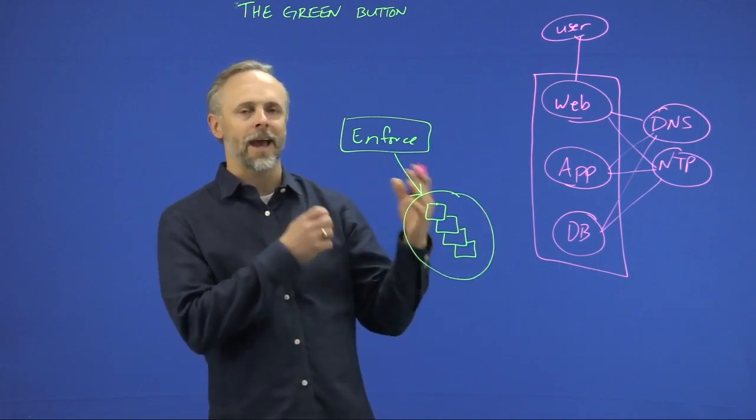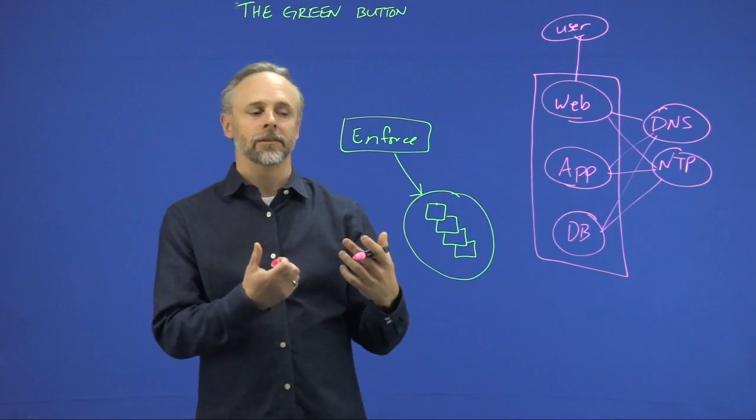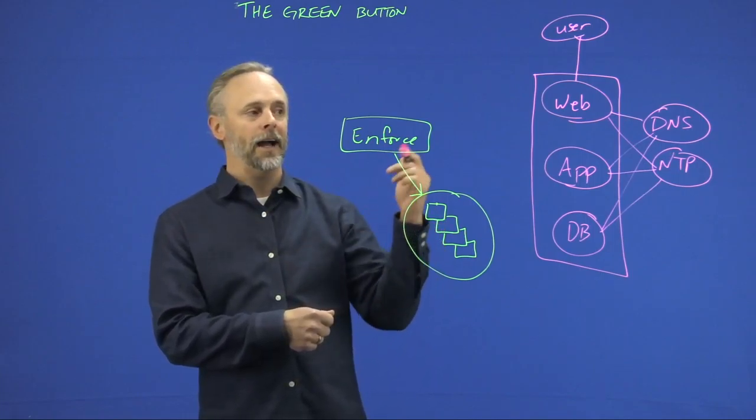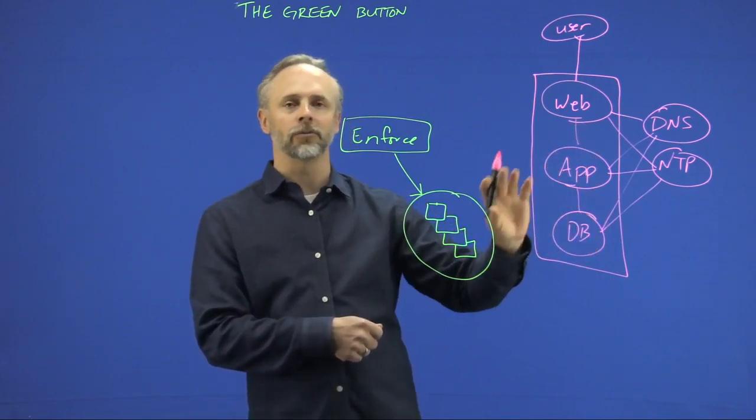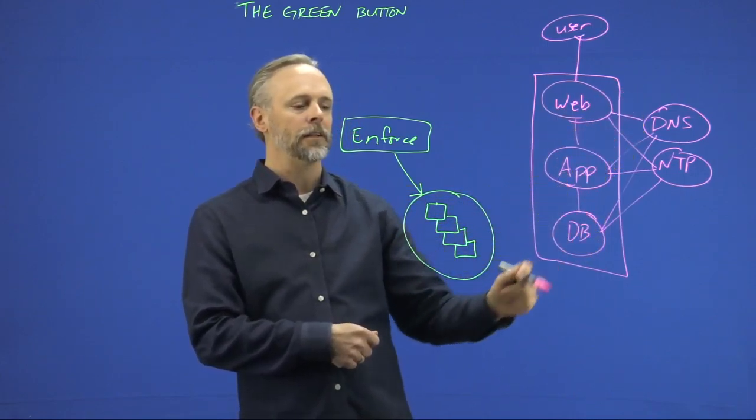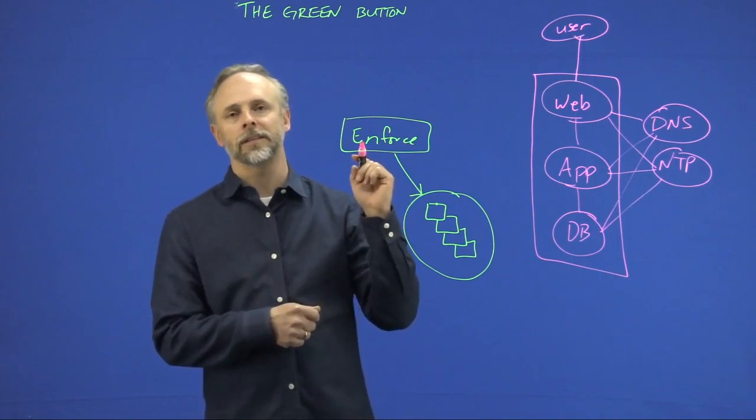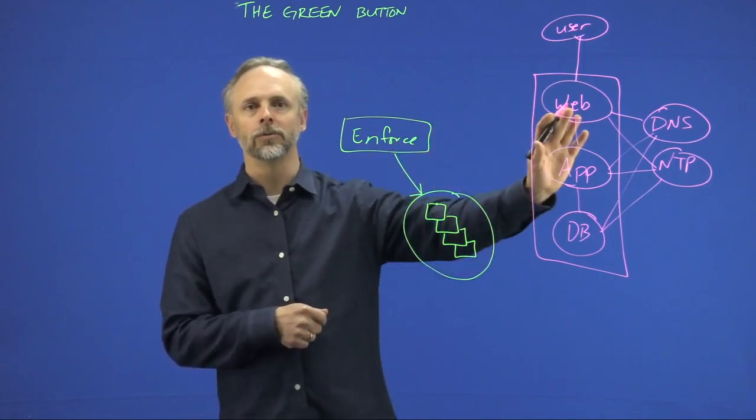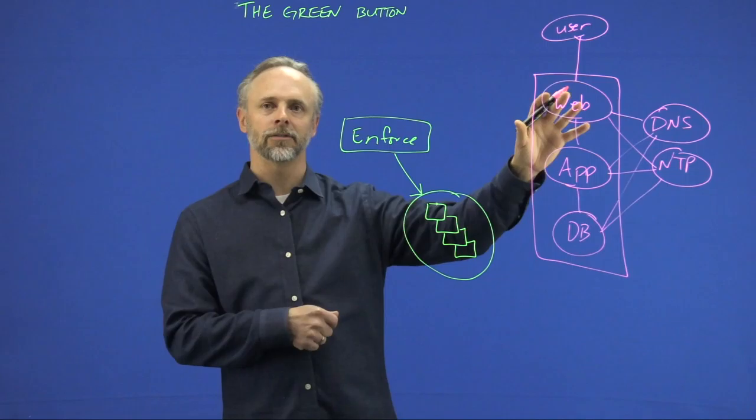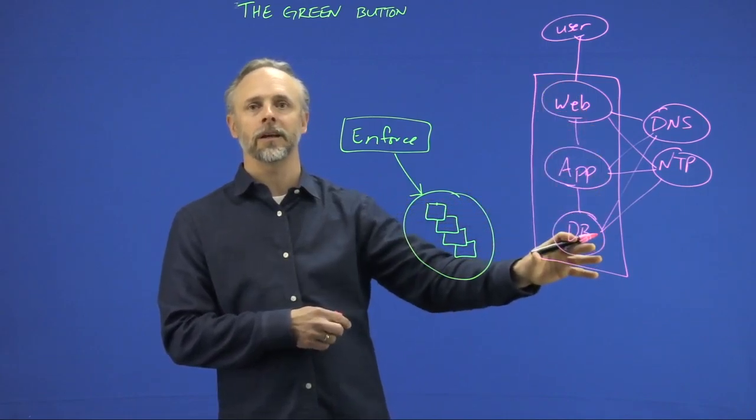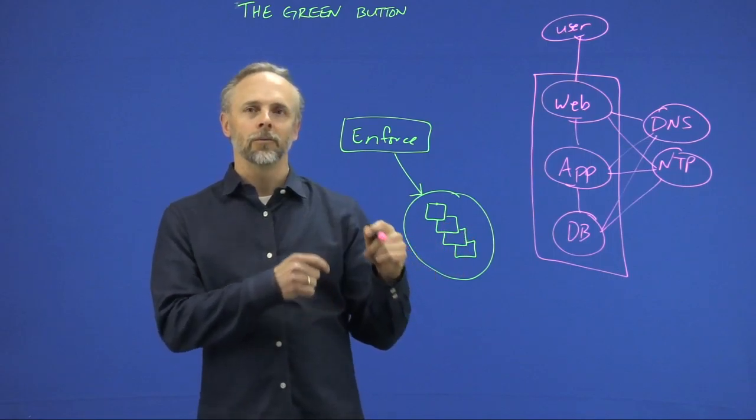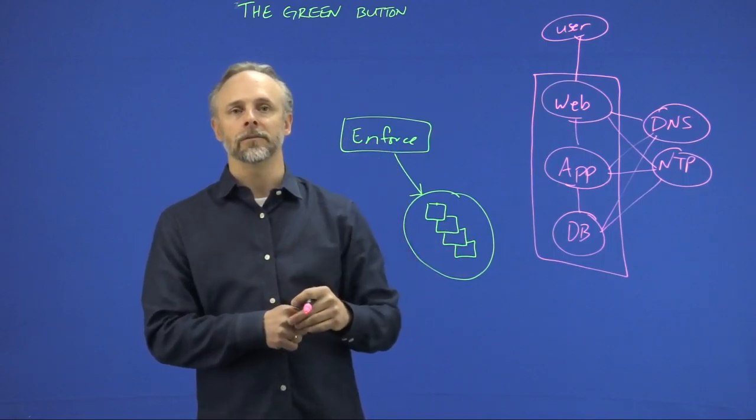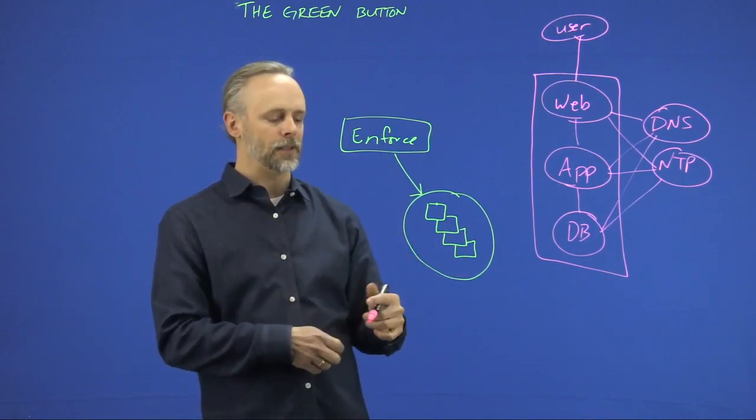Well once we have that information, that's when we have the ability to go in and say, all right, I understand this application and how it communicates internally, as well as all the things that it does externally. So now what I want to do is enforce only the behaviors that we have seen and said is okay within the application. So then I would go and just hit the green button. But what happens behind the scenes?